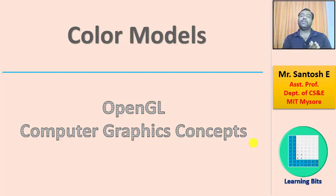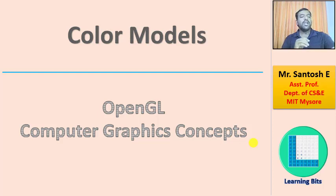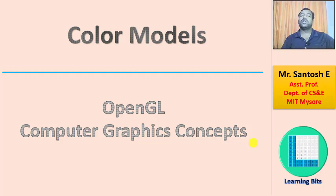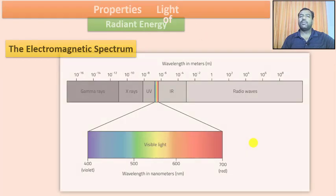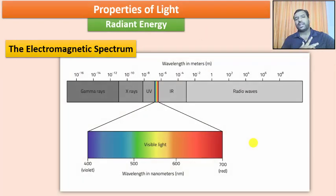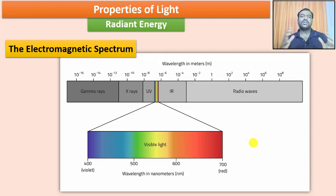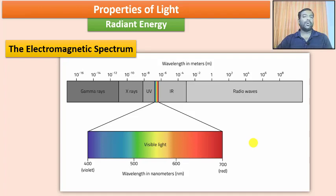Before we talk about illumination and the light source, you should have some basic understanding of the color models with respect to OpenGL programming. We will understand how exactly the color models will be used in your program and how exactly it should come into discussion with 3D viewing operations. When I talk about the color models, the basic is the properties of light, because whatever the human eye sees that is visible is called visible radiation, and whatever visible radiation we have, we call this as light. Hence light is a radiant energy.